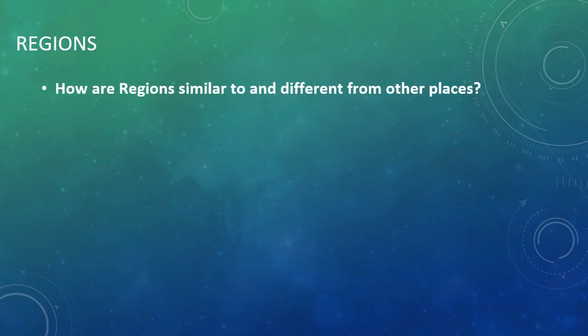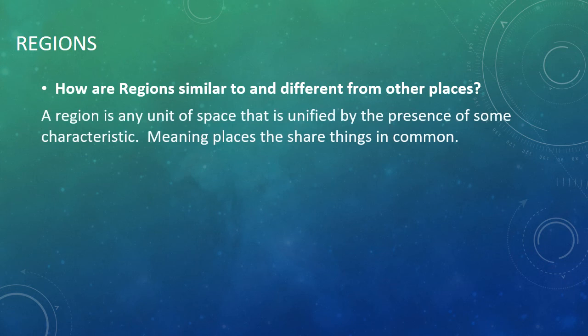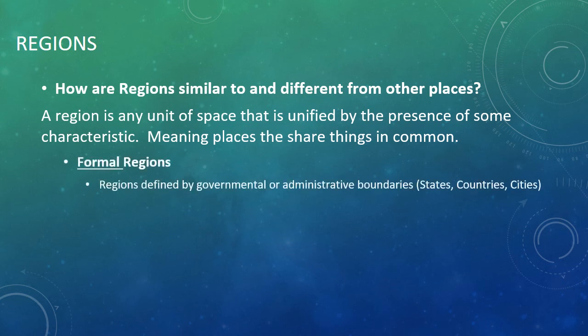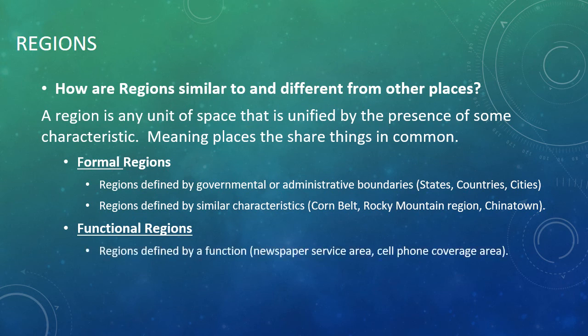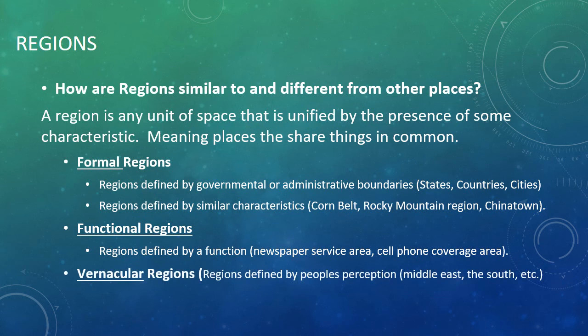Regions ask: how are regions similar to and different from other places? A region is any unit of space unified by the presence of some shared characteristic. Formal regions are defined by government or administrative boundaries like states, counties, countries, or cities. Other regions are defined by smaller characteristics like the Corn Belt, Rocky Mountain region, or Chinatown. Functional regions are defined by a function like a newspaper service area or cell phone coverage area. Vernacular regions are defined by people's perceptions, like the Middle East or the South.